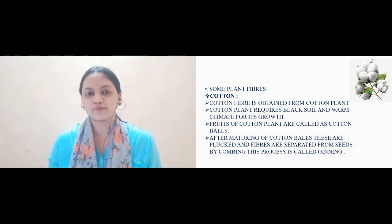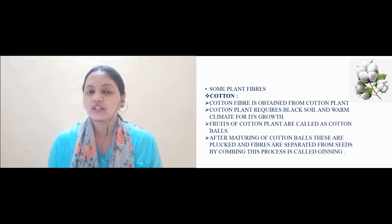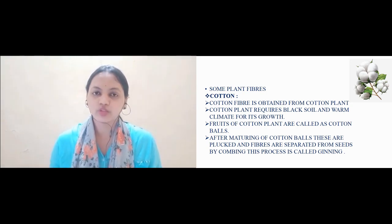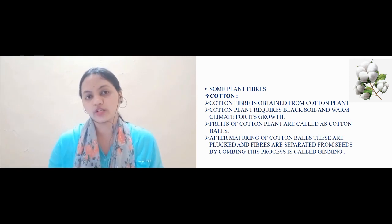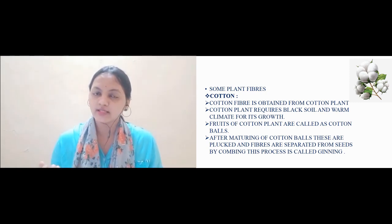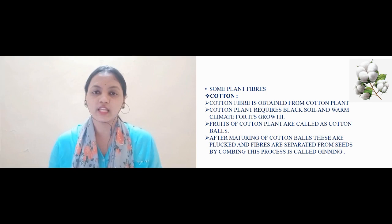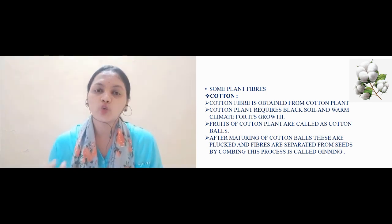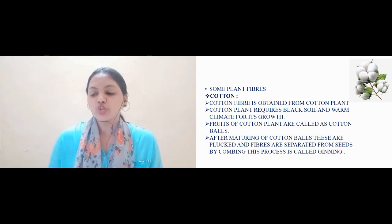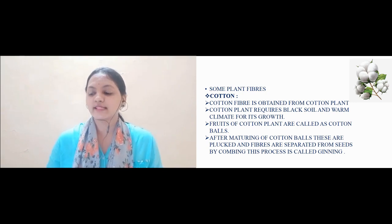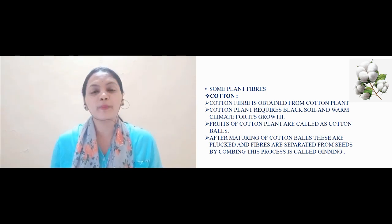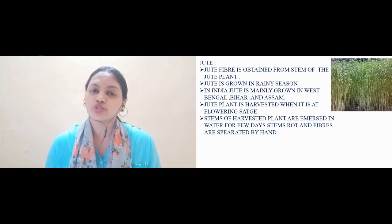So cotton plant requires warm and black soil for its growth. The fruits of the cotton plant are called cotton balls, and we have the process of ginning which is actually a combing process. Now we will move to our second plant, which is jute plant.